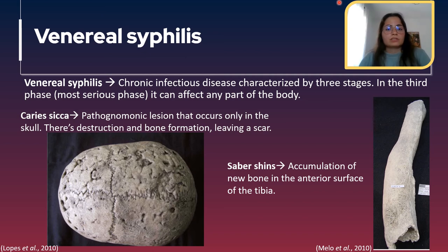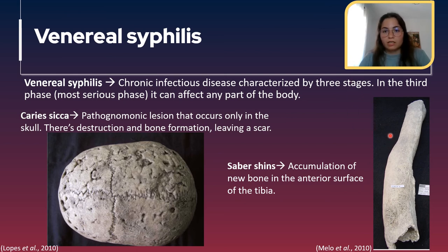Another lesion that occurs frequently in cases of syphilis is saber shins. Basically what happens is that there is an accumulation of new bone on the anterior surface of the tibia, as you can see in this image.